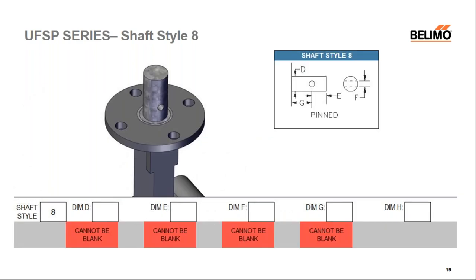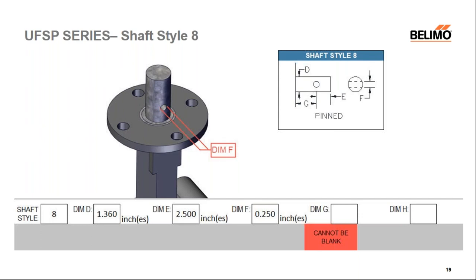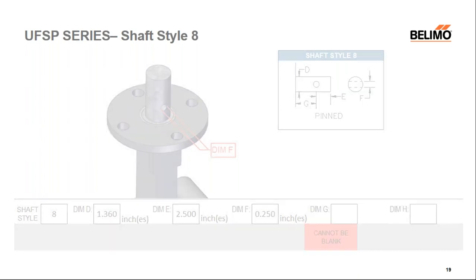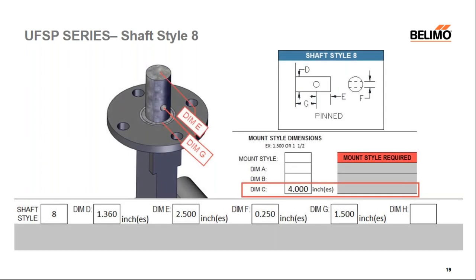Shaft style eight is a pinned shaft. Dimension D is the diameter of the shaft, dimension E is from the top of the shaft to the center of the pin hole, dimension F is the diameter of the pin, and dimension G is from the center of the pin hole down to the mounting flange. As a note, dimension E plus dimension G should always equal dimension C, the overall height of the shaft. If they do not add up, an error message will notify you.